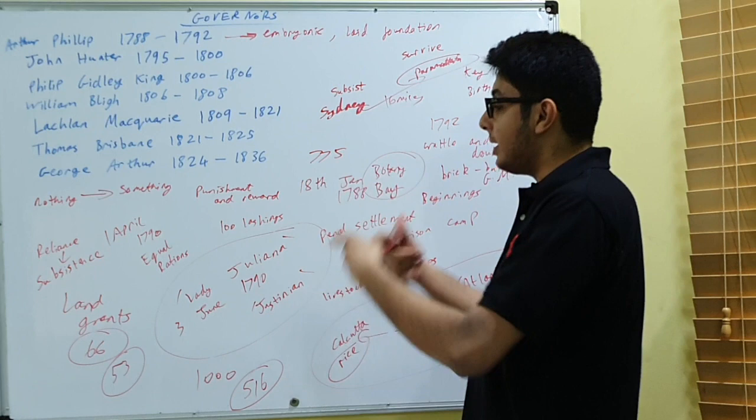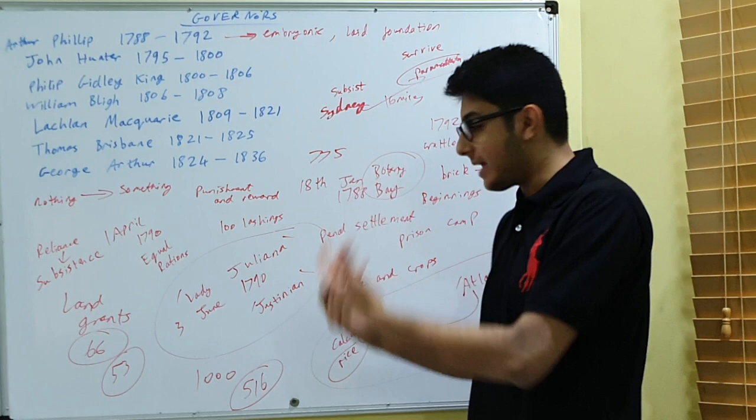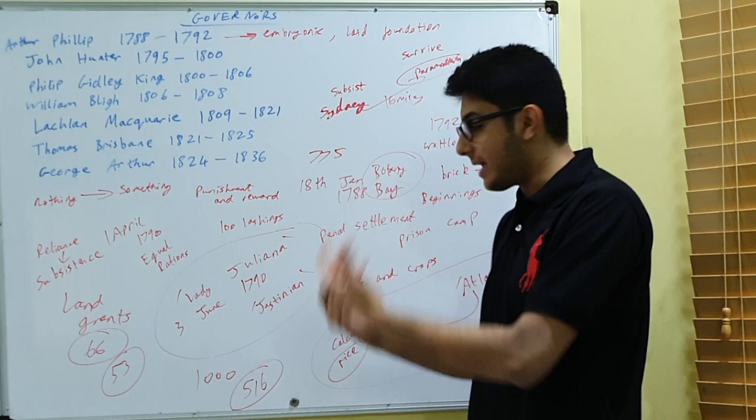In fact, 53 of these land grants were given to the convicts who served their term and were allowed to start a new life. So what that did is it appeased them, placated them, and turned them from convicts who had no economically viable skills into productive members of this new penal colony.